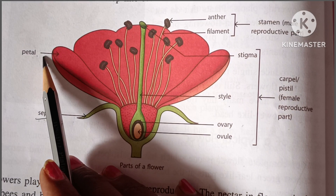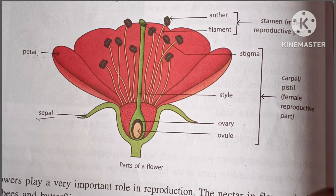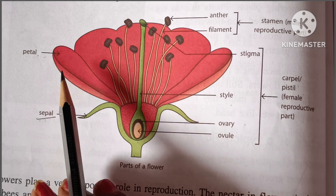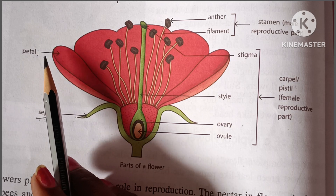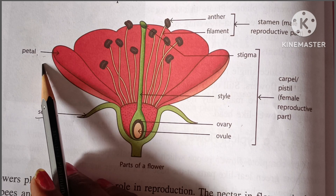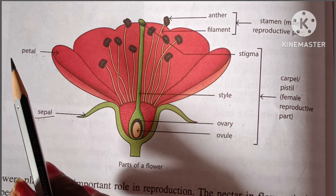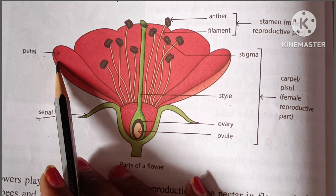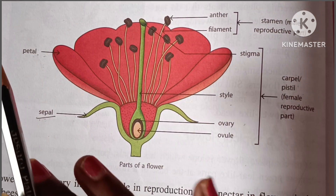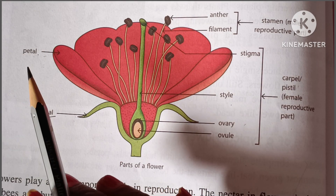The second one is the petal. Petals are in different colors like red, yellow, and white. This petal has different colors, and the main function of this petal is that it attracts insects. Insects help in the reproduction process. So the function of this petal is to attract insects, and those animals help in the reproduction process.